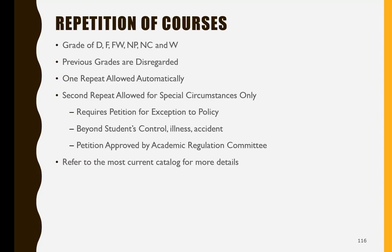Did you know that when you receive a grade of D, F, FW, NP, NC, or W the first time you take a course, you are automatically allowed to take that course again? The grade you receive for the repeated course then replaces the first grade, and previous grades are disregarded. A second repeat may be allowed if you receive a grade of D, F, NP, NC, or W when you repeated a course the first time, but only under special circumstances — such as an illness or an accident beyond your control. To seek permission to repeat a class for a second time, you must complete the online form, Petition for Exception to Policy. Documentation of the special circumstance is required and must accompany the petition.